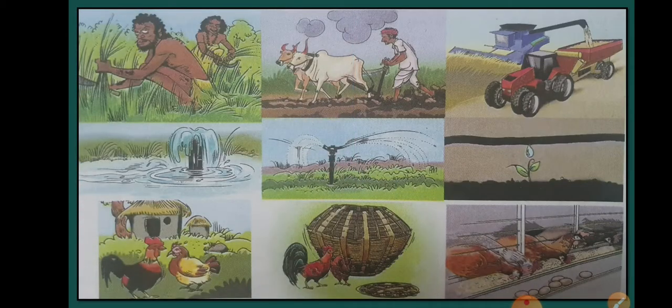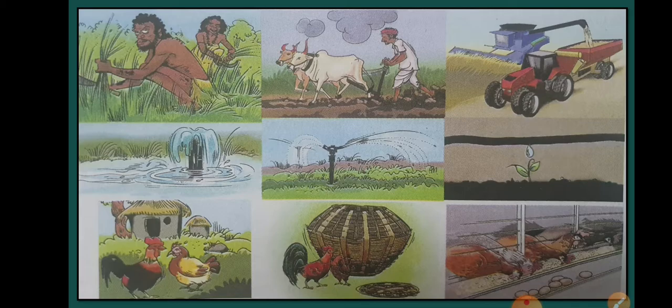Now let's see one more image. In this image we see the changes in agricultural practices. In the past, primitive man had to wander in the forest to sustain himself on the collected forest produce. Later he learned the art of cultivation and started getting greater production from the land. In the beginning, people used to do manual work. Later on they started using animals, and after that today they are using machines. We are also more conscious about using water wisely, not wasting it — using drip irrigation and sprinkler irrigation to supply water systematically to plants.